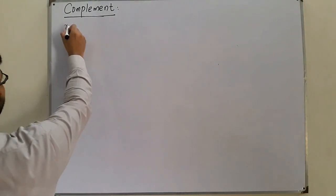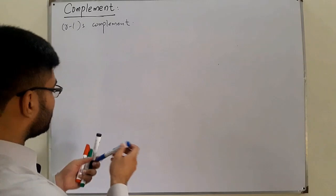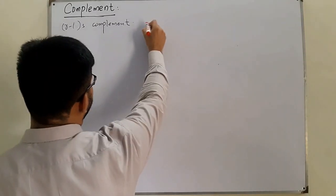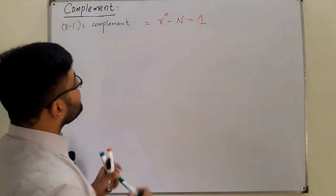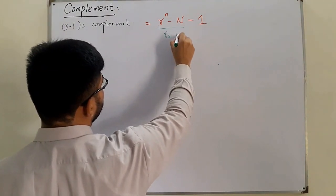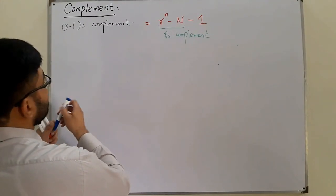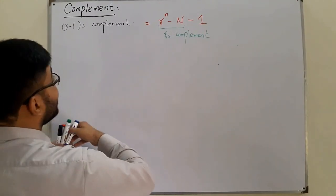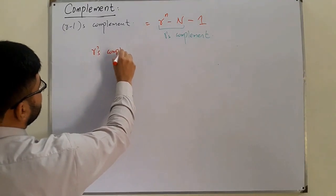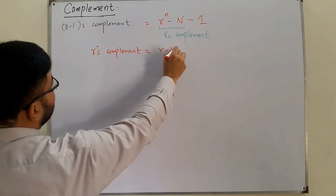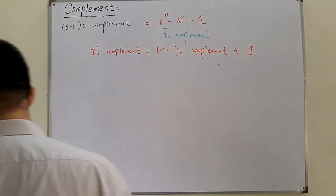The next type is the R-minus-1's complement, and the formula for that is R to the power n minus N minus 1. Now if you look at this, R to the power n minus N is the R's complement. So I can write: R-minus-1's complement equals R's complement minus 1, or equivalently, R's complement equals R-minus-1's complement plus 1. This is an important postulate.